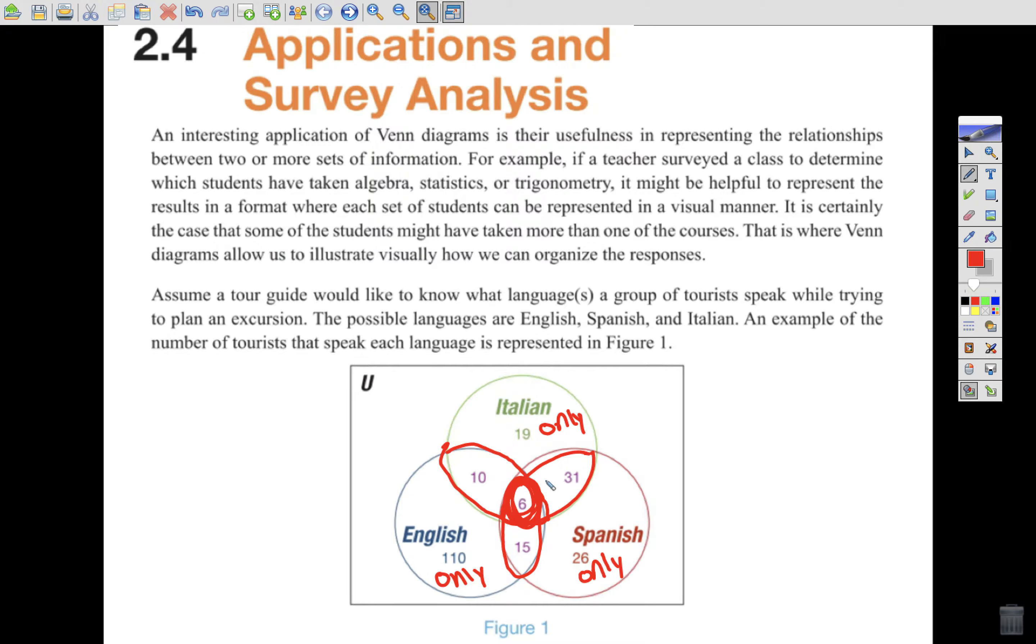Okay? So we're going to have to understand each piece. Obviously, out here would be the people that spoke none. Maybe there's some people that responded and spoke none of the three languages, but there's still people in the universal set. Okay? So that's how we're going to start going through dissecting these Venn diagrams. We're going to create them. We need to understand the language that goes along with them.